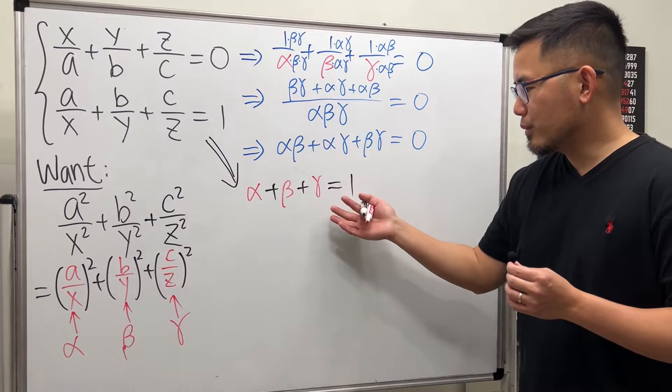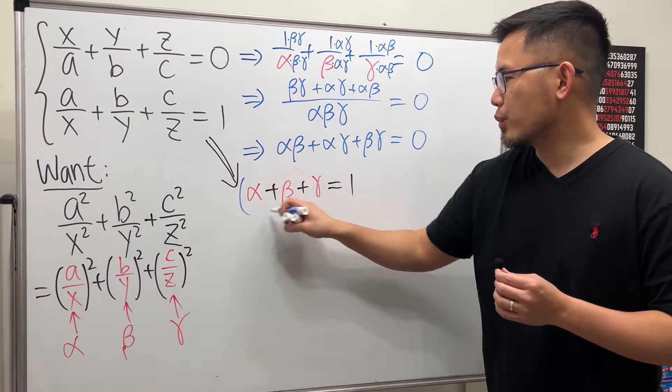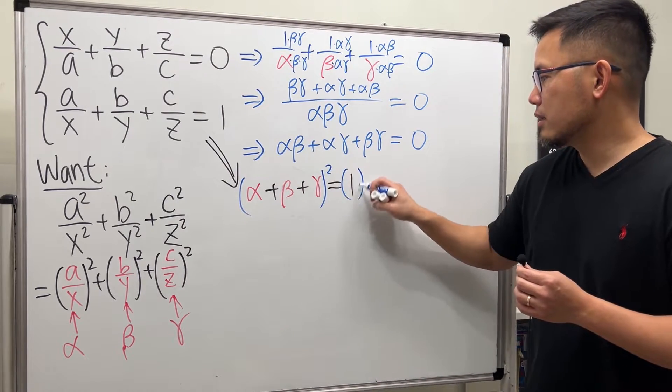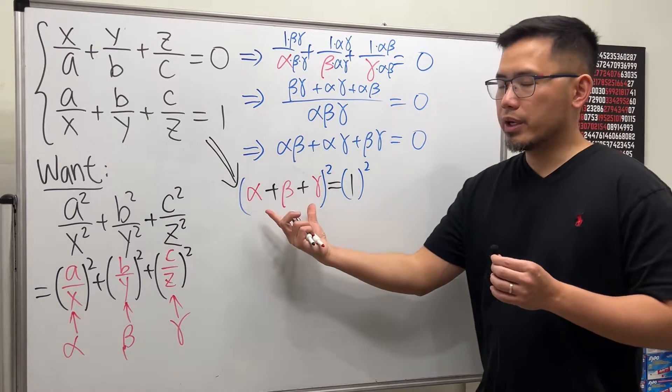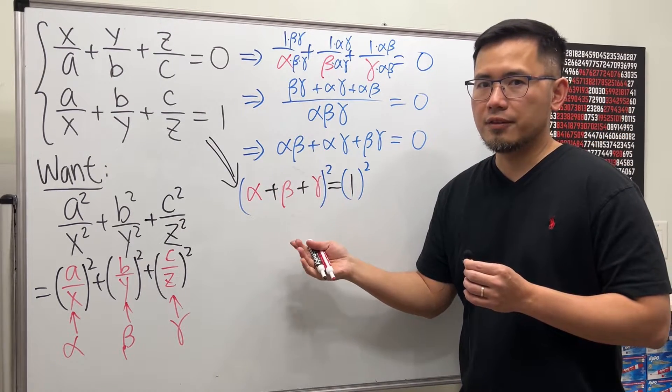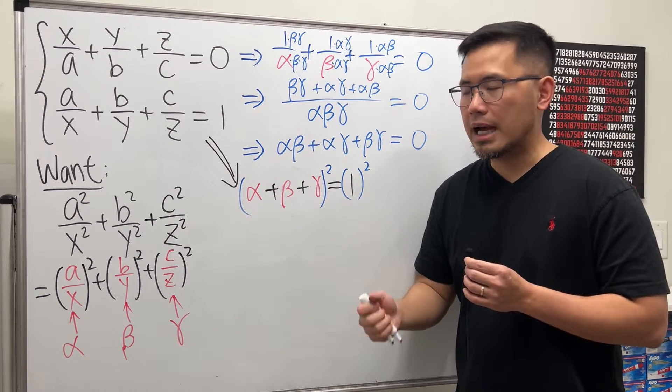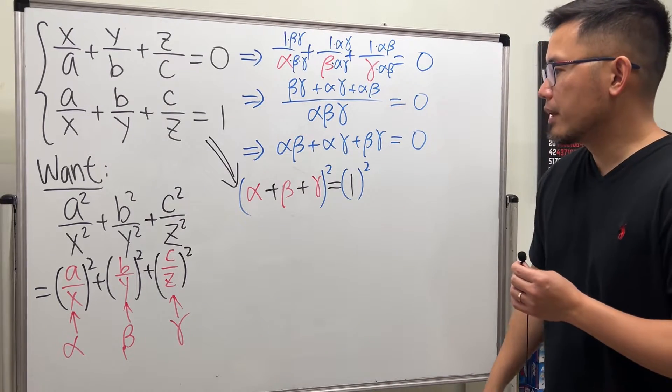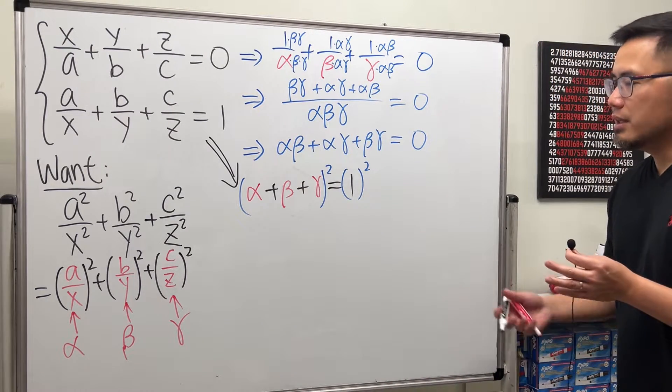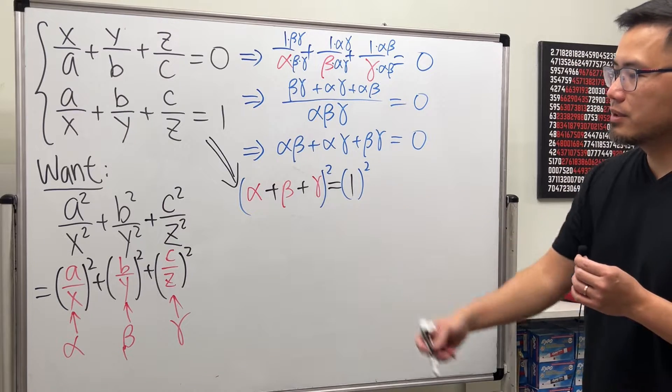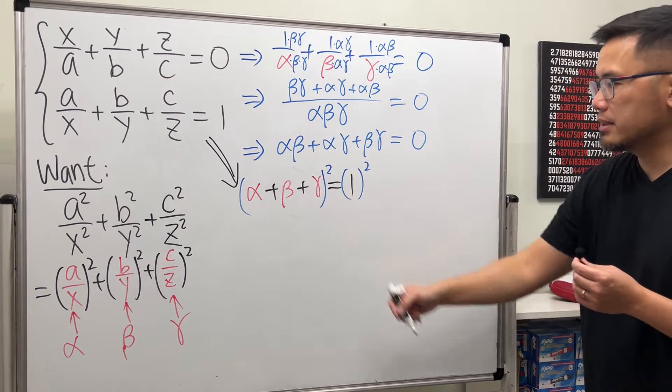Well, have a look right here. Let's go ahead and square both sides. How is that? Why? Because this way we can produce the alpha squared and all that stuff. But we do have more things that's happening now. So let's pay close attention to here.